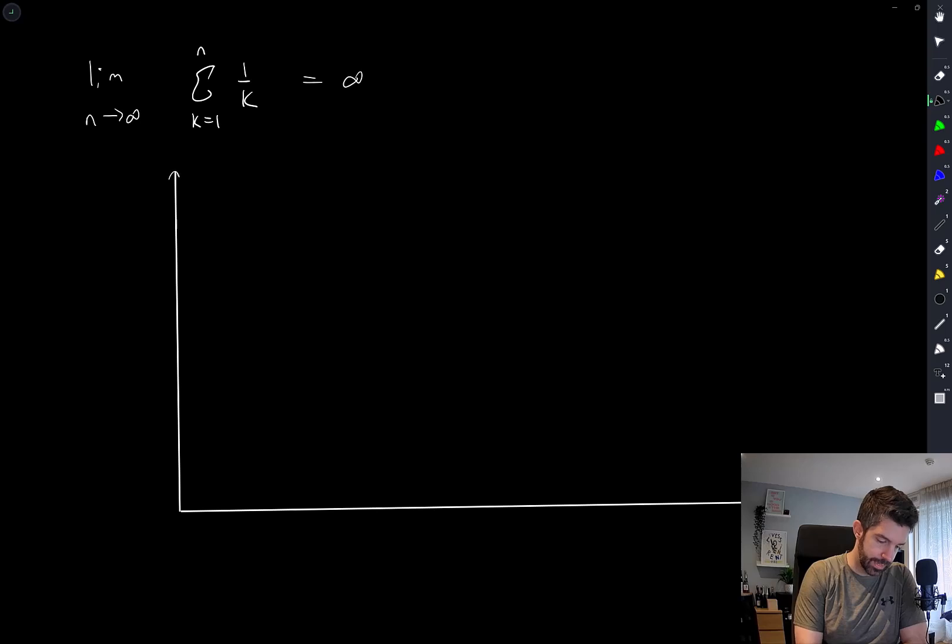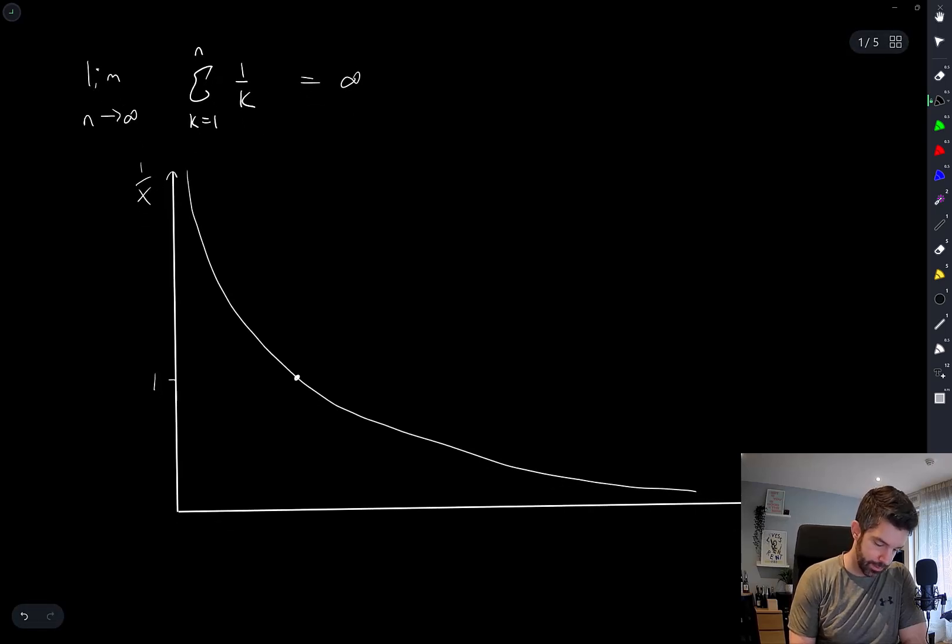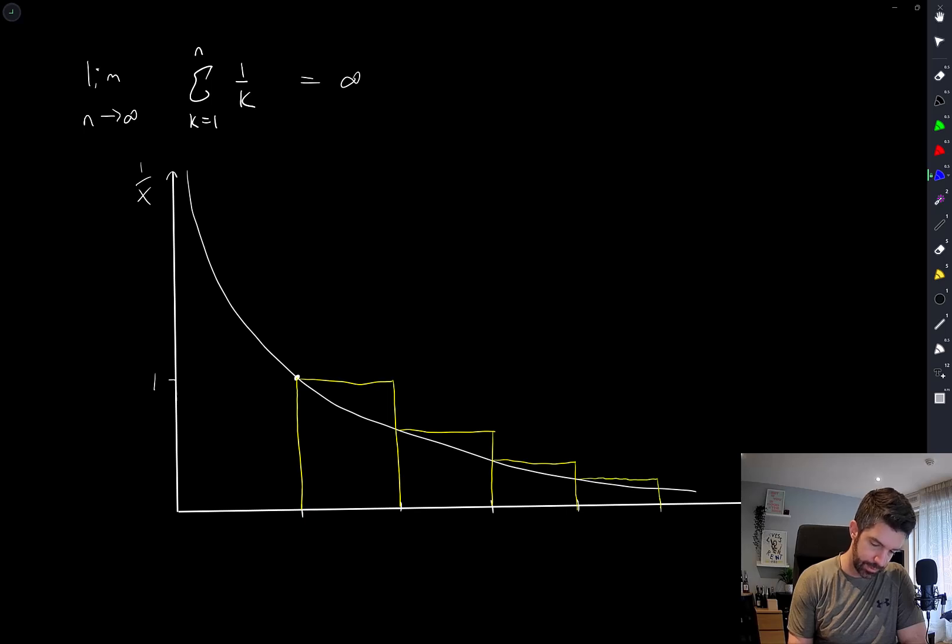So if I have x here and I plot the function 1/x, so that's 1, 1/x on that axis, then what I want to do is I'm going to draw rectangles which represent each individual term in the sum. So I'm obviously not drawing this to scale but that's fine, the point should be clear and this continues.